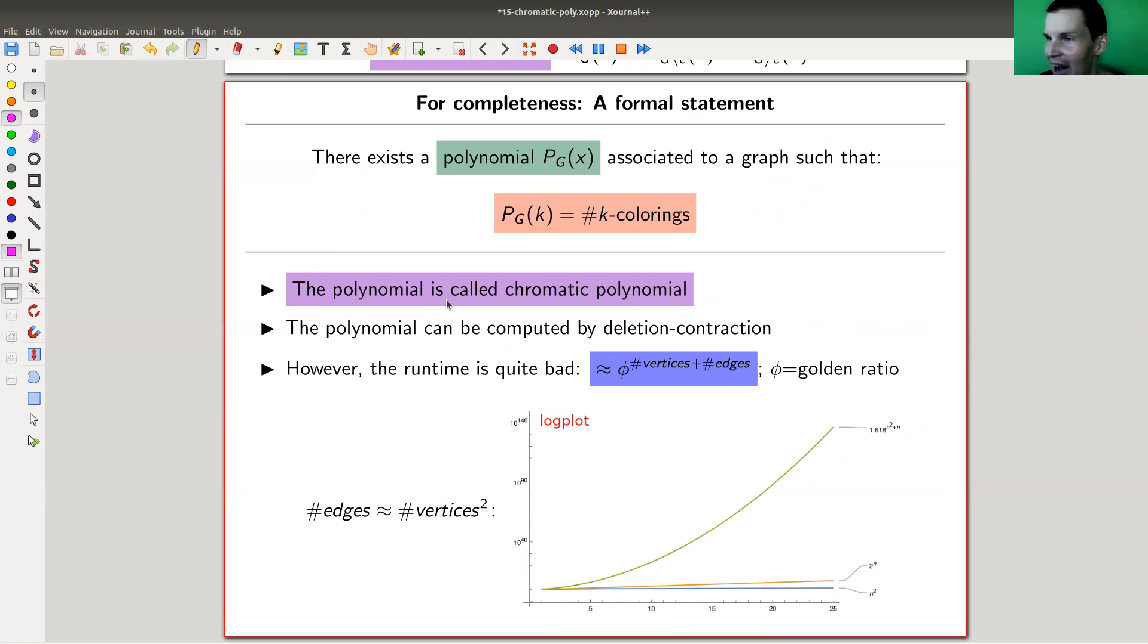sorry, now, what a surprise. There exists a polynomial. I say it again, this is really surprising, but kind of from how I motivated the video, I guess it's not surprising anymore. And there exists a polynomial associated to any graph, such that evaluating if k is the number of colorings. And that one is called the color polynomial, or the chromatic polynomial.